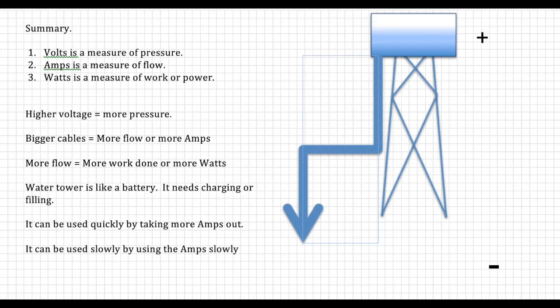So let's summarize what we know so far. Volts is a measurement of pressure. Amps is a measurement of flow. Watts is a measurement of work or power. Higher voltage is the same as more pressure. Bigger cables, more flow or more amps. More flow equals more work done, or more watts. Our water tower is like a battery. It needs charging or filling up occasionally. It can be used quickly by taking more amps out, or it can be used slowly by using the amps slowly. Taking less out.